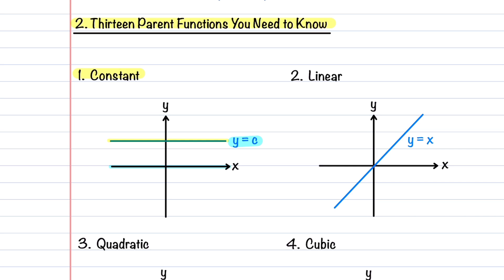Our second function is the linear function, described by the equation y = x. It's a straight line passing through the origin, has a slope of 1, and is defined for all values of x.